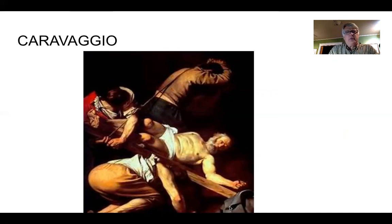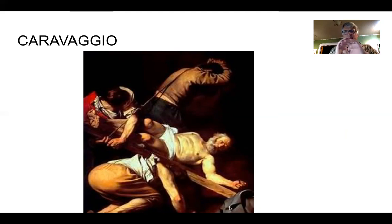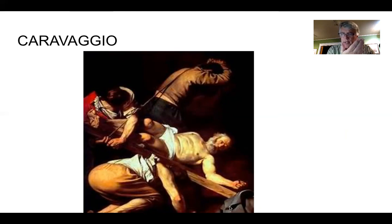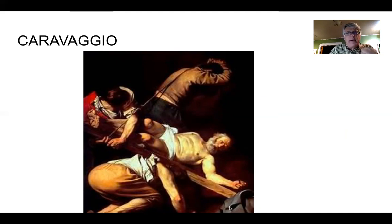Caravaggio used a lot of lights and darks — he uses light very powerfully. But also the way that he paints the human skin and the body, the way that he molds it and paints it, is just absolutely beautiful. It looks very, very realistic when he does it.